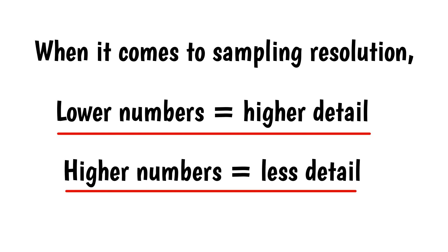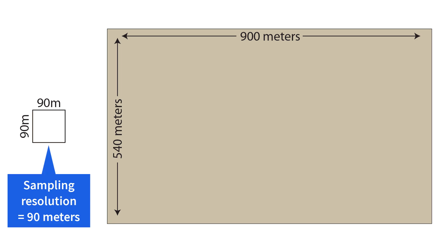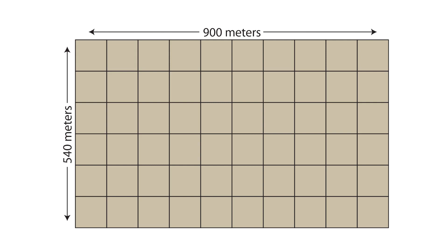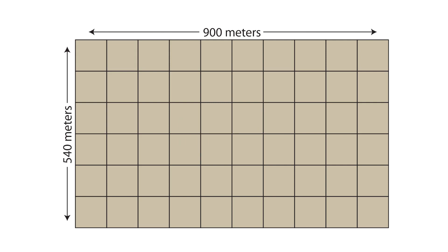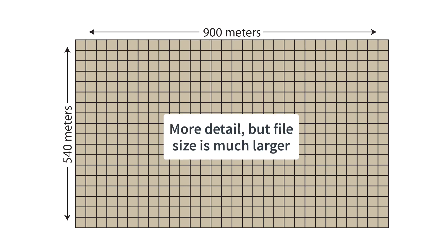Here's an illustration of this concept. Here we have a piece of land that's 900 meters by 540 meters. First, we'll sample it at a resolution of 90 meters. Here's the piece of land divided into a 90 by 90 meter grid. You can see that it takes 60 blocks to cover the area at a sampling resolution of 90 meters. If we want to cover the same piece of land at a sampling resolution of 30 meters, resulting in a more detailed image, it now takes 540 blocks of data to cover the area, compared to 60 blocks. We get more detail at 30 meters, but the file size is much larger and there's a lot more data we have to process.